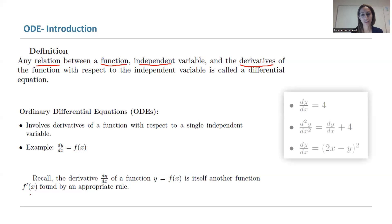What are some examples of differential equations? First, y' = 4, where x is the independent variable and y depends on x. The second equation takes the second derivative of y with respect to x and sets it equal to the first derivative plus a constant. The last one: dy/dx = (2x - y)². These are three examples of differential equations.